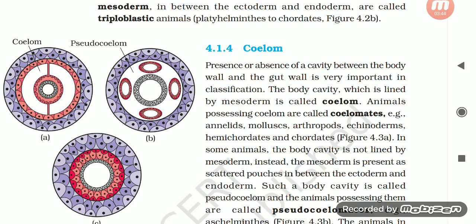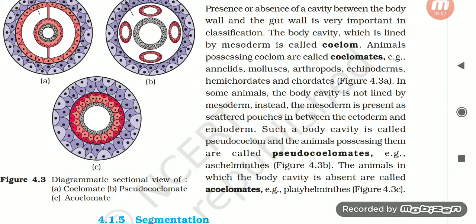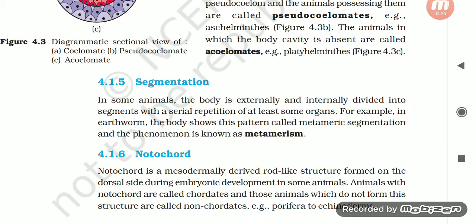Coelom: The presence or absence of a cavity between the body wall and the gut wall is very important in classification. The body cavity which is lined by mesoderm is called coelom. Animals possessing coelom are called coelomates, e.g. annelids, molluscs, arthropods, echinoderms, hemichordates, and chordates. In some animals the body cavity is not lined by mesoderm; instead mesoderm is present as scattered pouches between ectoderm and endoderm — such a body cavity is called pseudocoelom, and animals possessing it are called pseudocoelomates, e.g. Aschelminthes. Animals in which the body cavity is absent are called acoelomates, e.g. Platyhelminthes.